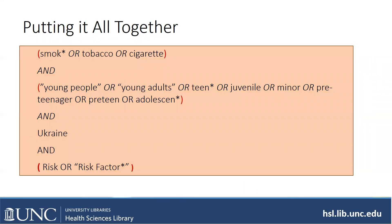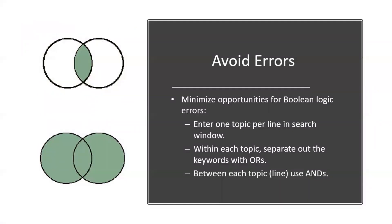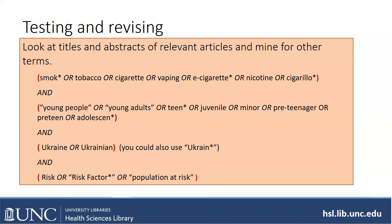Putting it all together — here is a built-out search strategy. SMOK* OR tobacco OR cigarette, then all the young people terms with ORs between them, and Ukraine and risk OR risk factor. Some of these were new keywords after we mined the titles and abstracts. To avoid errors, it's better to search one topic per line in your search window than to create one mega search. Make sure you separate out all keywords with ORs, and between each topic use ANDs. Scan titles and abstracts of relevant articles — sometimes doing this several times reveals other terms. After looking at some articles, I'm now adding cigarillo, vaping, e-cigarette.